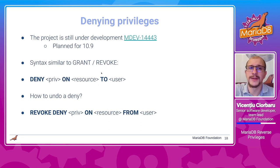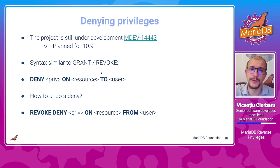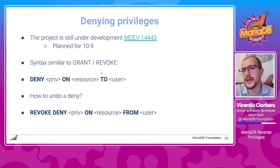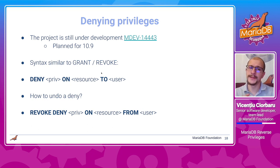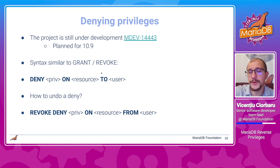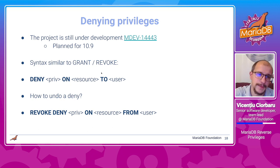The project is not yet in MariaDB — it is under development. I'm working on it, and it's planned for release in 10.9. You can track the progress in MDEV-14443. I've explained the syntax there as well. We propose a similar syntax to grant and revoke, getting inspiration from SQL Server. We're going to allow deny — you specify a set of privileges on a particular resource and deny it to a particular user. For undoing denies, we have a special syntax called revoke deny. You can think of denies as working in parallel to the current grant/revoke pair of commands.